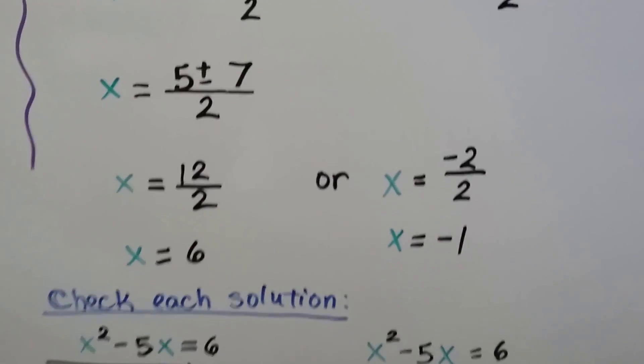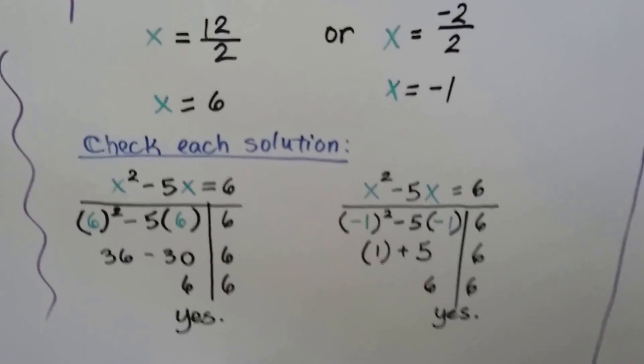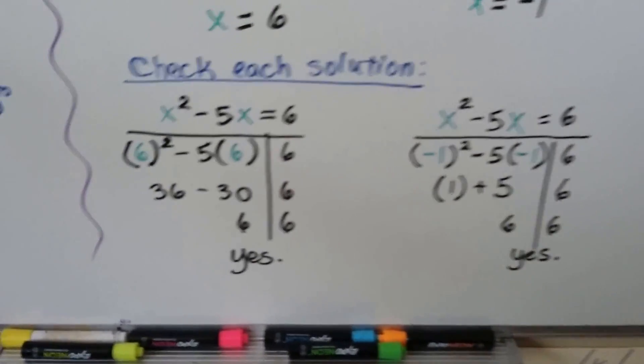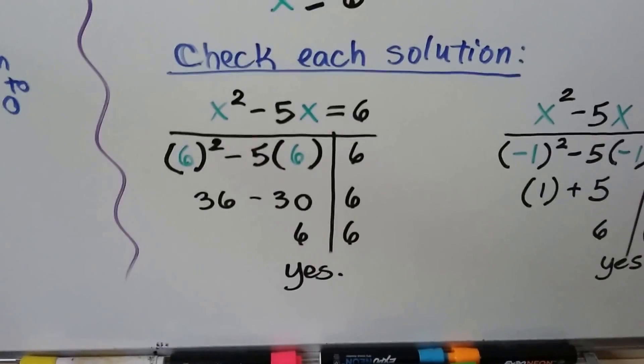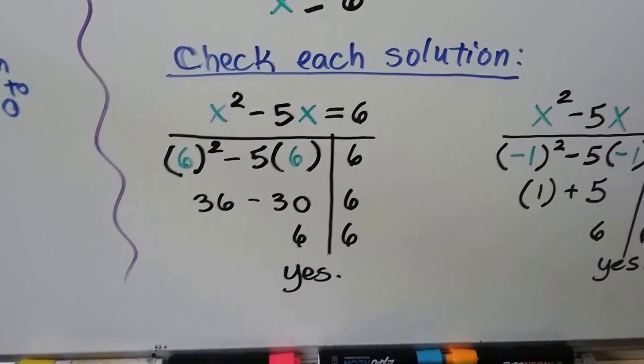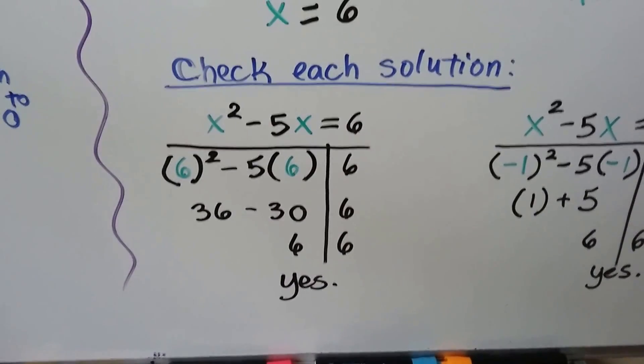We can check each solution. For x = 6, we put a 6 wherever the x is. We get 36 - 30, which is 6. Yep, that works. 6 = 6.